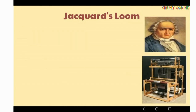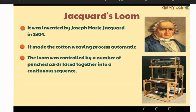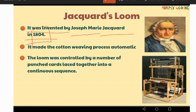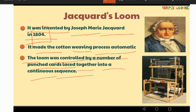Next is the Jacquard Loom. It was invented by Joseph Marie Jacquard in 1804. It made the cotton weaving process automatic. The loom was controlled by a number of punch cards linked together in a continuous sequence.